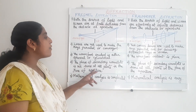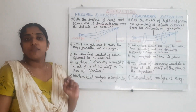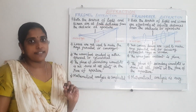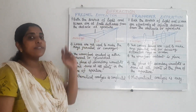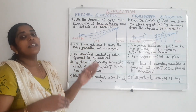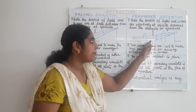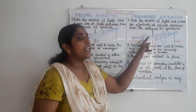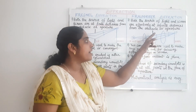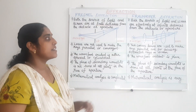In Fresnel diffraction, the phases of the secondary wavelets are not the same at all points in the plane of the slit, because the light has travelled different distances before entering the slit. So there is a path difference between these waves, which produces a phase difference. That is why the secondary wavelets produced from the plane of the slit have different phases. But in Fraunhofer diffraction, using convex lenses we produce a plane wavefront and the waves travel equal distances. Therefore there is no path difference when the rays enter the plane of the slit, and the phases of the secondary wavelets are the same at all points.